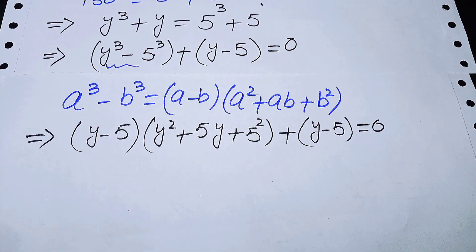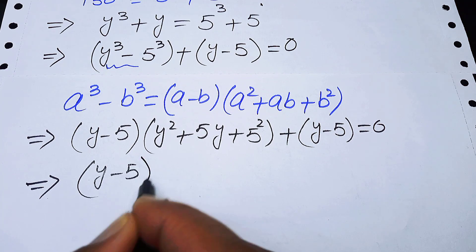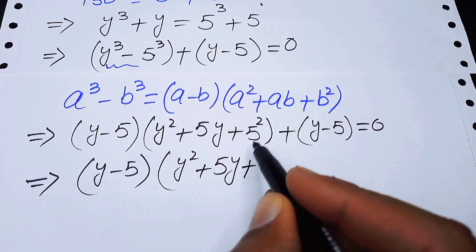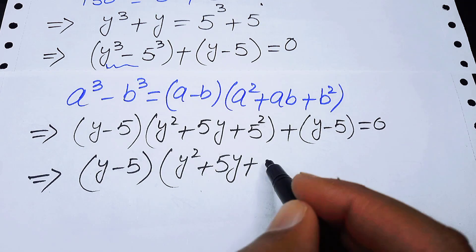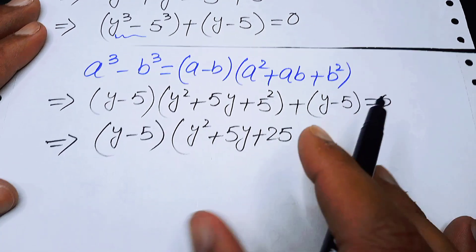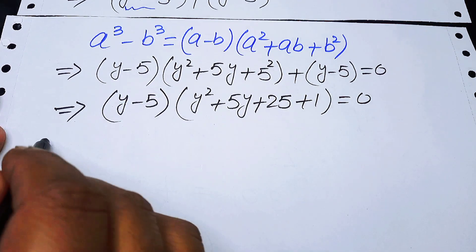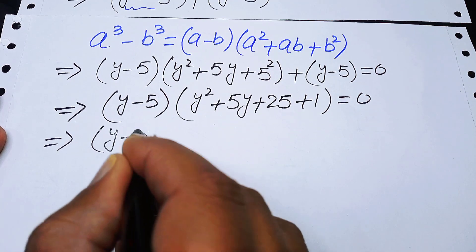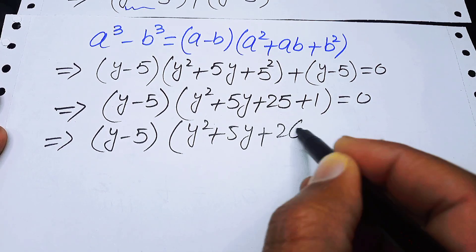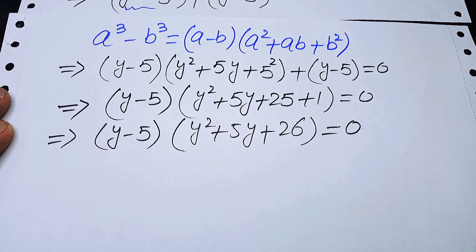We factor out y minus 5 from both expressions. Inside the bracket we have y squared plus 5y plus 25 plus 1, giving us y minus 5, times y squared plus 5y plus 26, equals 0.